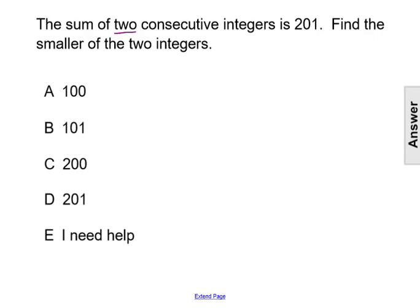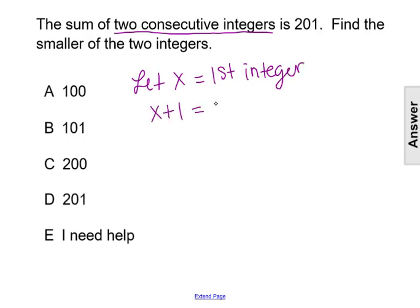To represent two consecutive integers, we'll let x equal the first integer, whatever our first one will be. And then we'll let x plus 1 equal the second integer, since the next number, that second integer, will be 1 away or have a difference of 1 from the first.